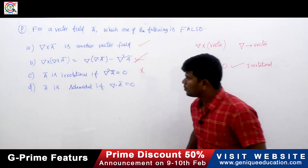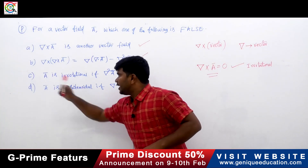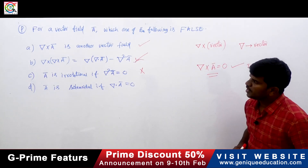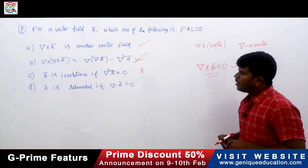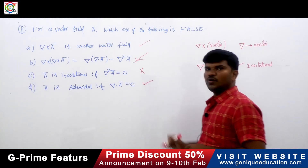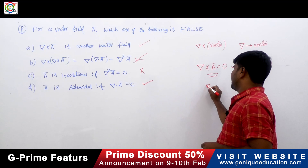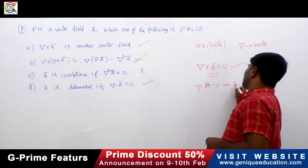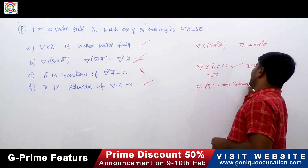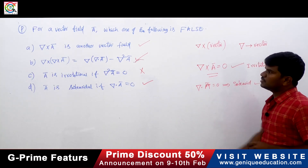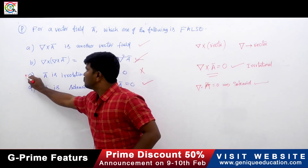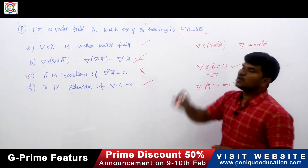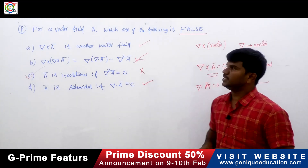Option D: ā is solenoidal if del dot ā is zero. This is correct — if the divergence del dot ā equals zero, the vector is called solenoidal. So the false answer is option C, which incorrectly defines irrotational using del squared instead of the curl.